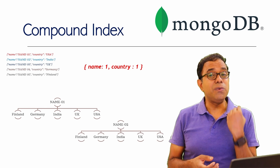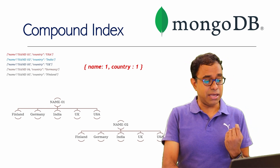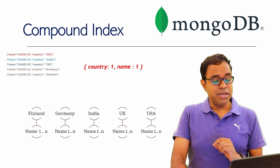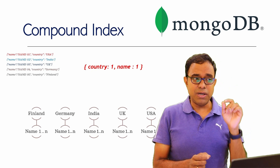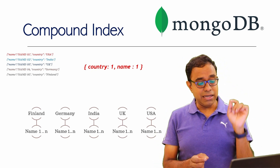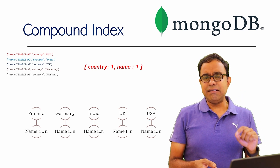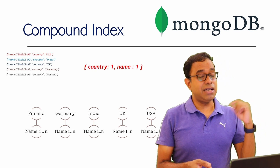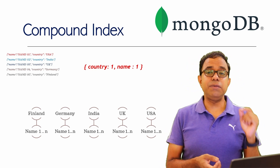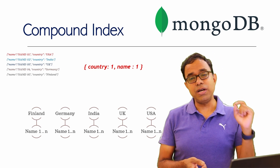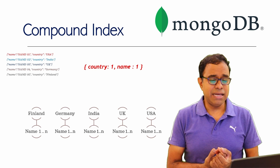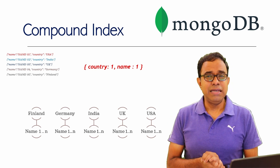If you create the index on country as well as name, it will allocate country in ascending order — you can see Finland, Germany, India, UK, USA — and inside each country there will be names associated with that country. For Finland, if there are 2,000 records, they will be sorted in order. Now we understand how the compound index looks.